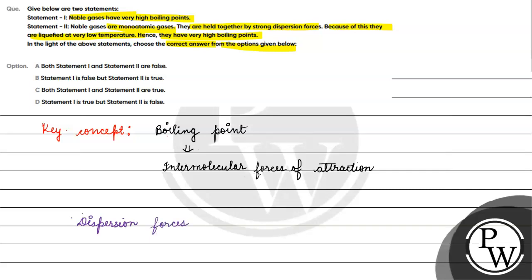In London dispersion forces, momentarily, ek particle mein charges ka accumulation ek end pe ho jaata hai, yaani ek momentary dipole ban jaata hai. Is dipole ki wajah se doosre atom mein bhi dipole induce ho jaata hai, which causes a force of attraction. This was observed by Fritz London and that's why we call it dispersion forces. This is a weak intermolecular force of attraction.